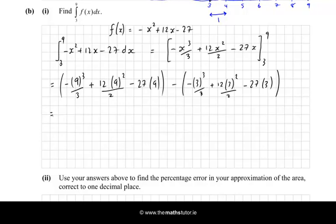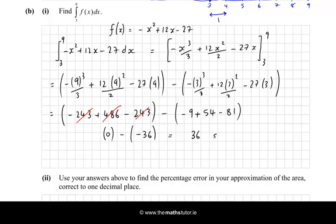And just throwing this into the calculator. Minus 9 cubed over 3 is minus 243, plus 486, minus another 243. And then the next one gives me minus 9, plus 54, minus 81. And in the first one here, everything cancels. So we just have 0 here. And then minus, we actually get minus 36 in this bracket. So the answer is 36 square units.